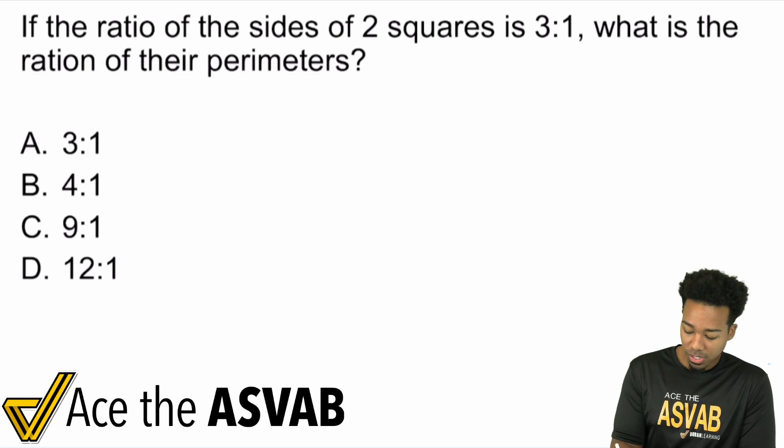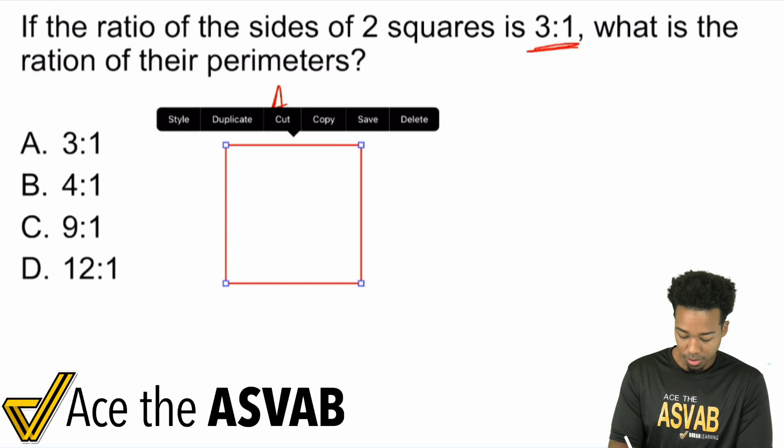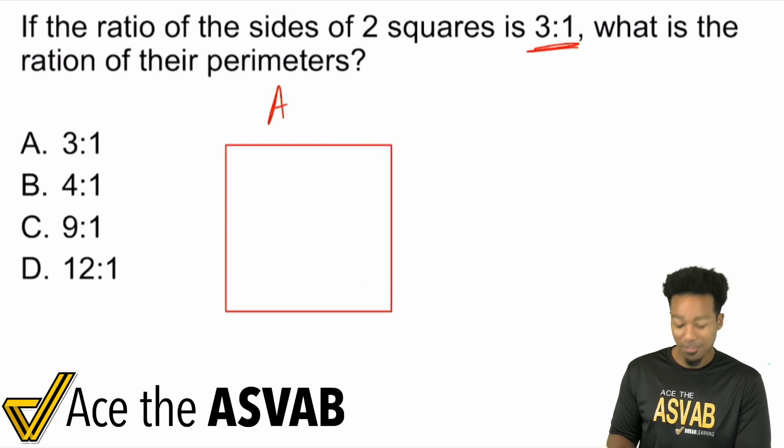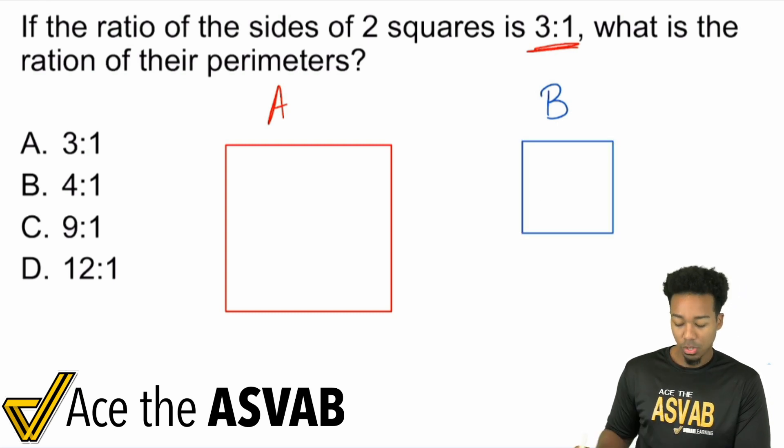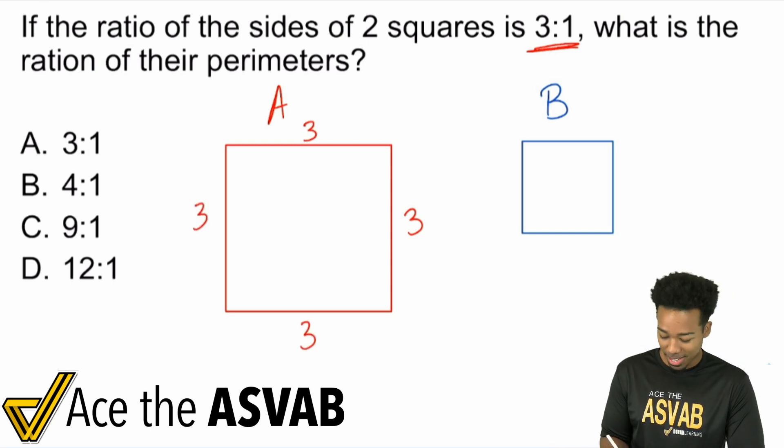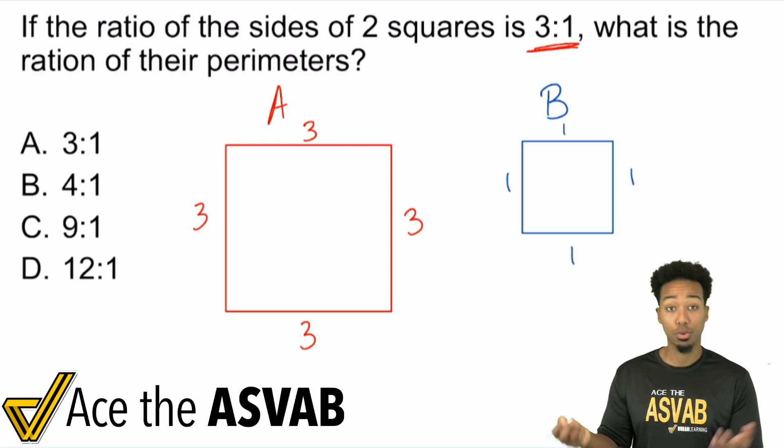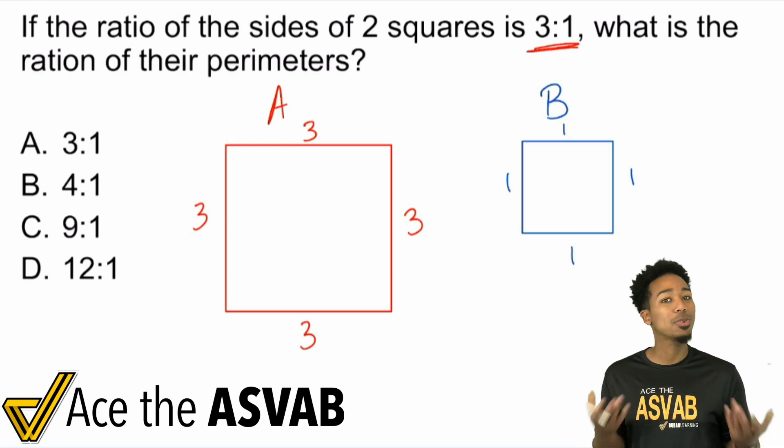If the ratio of the sides of two squares is 3:1, let's go ahead and draw square A over here. That's kind of like a square. And I'll say this is the bigger square. Then we have square B over here, and I'm going to make this one a little smaller. The ratio of the sides is 3:1. So what I can say is, side A, one of the sides for A could be, let's say 3. You can use easy examples. And the ratio for side B, let's call that 1. The ratio is 3:1.